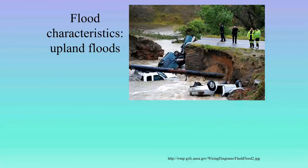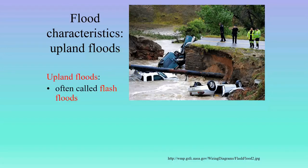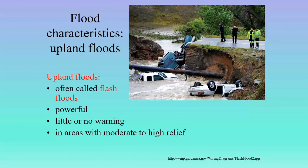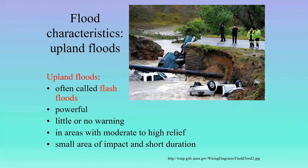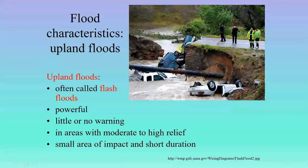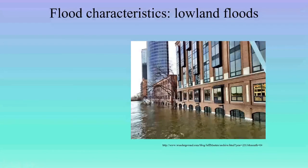There are a couple different types of floods. The first are called upland floods, also known as flash floods. These occur in moderate to high relief areas — mountainous areas, coming out of mountain canyons. They're powerful, they come quickly with little or no warning, they're done fast. They generally have a relatively small area of impact and short duration. Here's a picture from a flash flood in 2013 in Colorado — you can see how the flash flood ate the road base out from underneath, causing cars to fall into the road.